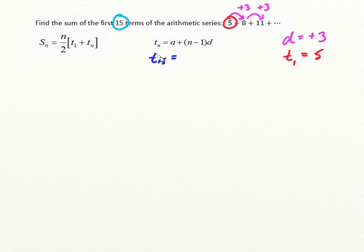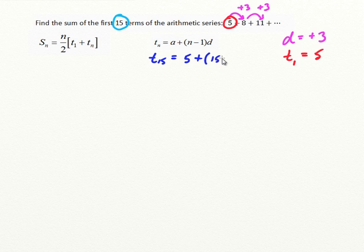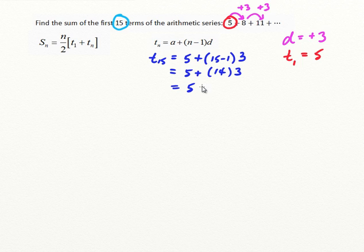So in order to use this equation, we need to solve for t15 first. t15 is equal to a, the first term, which is 5, plus (n minus 1), well n is 15, so 15 minus 1 times d, which is the common difference, which we've identified as 3. Remember your BEDMAS rules: t15 equals 5 plus 14 times 3, which is 5 plus 42. So t15 is equal to 47.